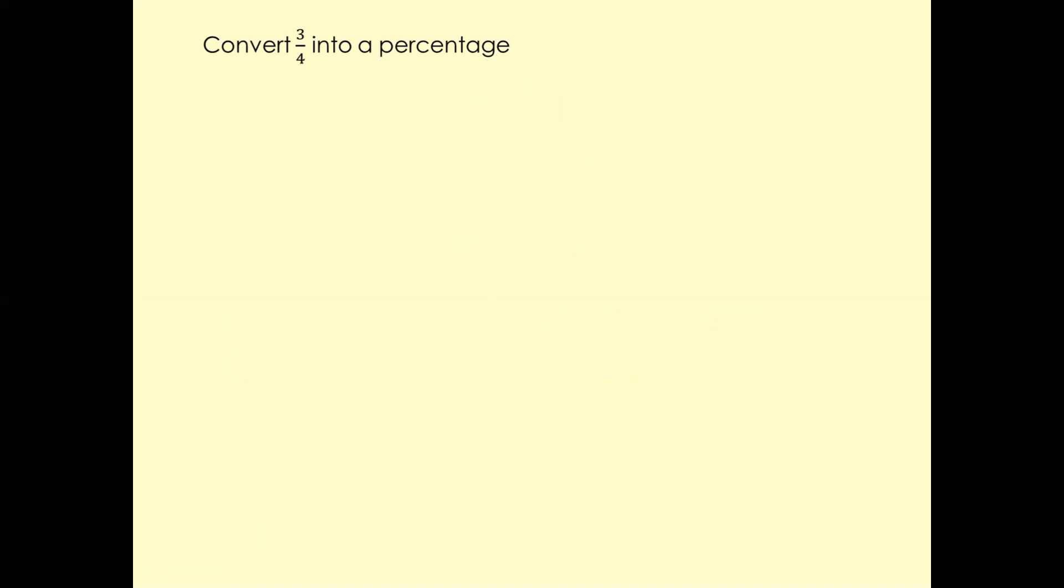Let's have a look at this question. Convert 3/4 into percentage. Now I'm going to use the same rule again. We have to convert this number here, which is the denominator, into 100 first. What can we do to convert 4 into 100? We times that by 25. Now we're going to use the same number and times that by the top number. So 3 times 25 is 75. So that becomes 75 over 100, which is 75 parts per 100, and the answer is going to be 75%.